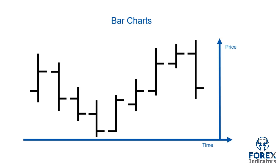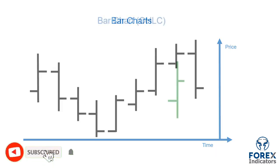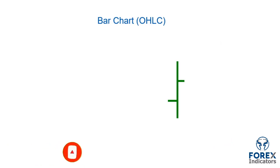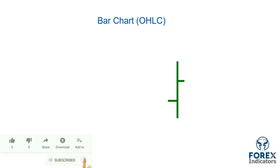On most chart settings, you will see an option with OHLC as the heading. This is an abbreviation for the open, the high, low, and close. Let's take a look at each of these features, as each bar is created using this important information.